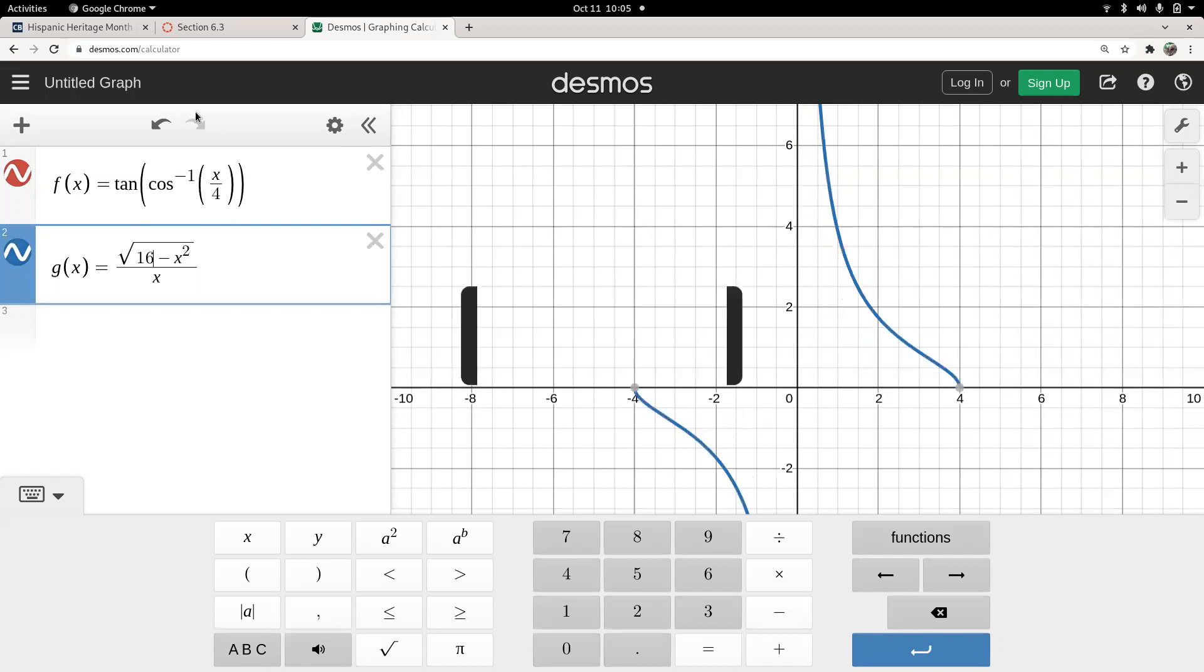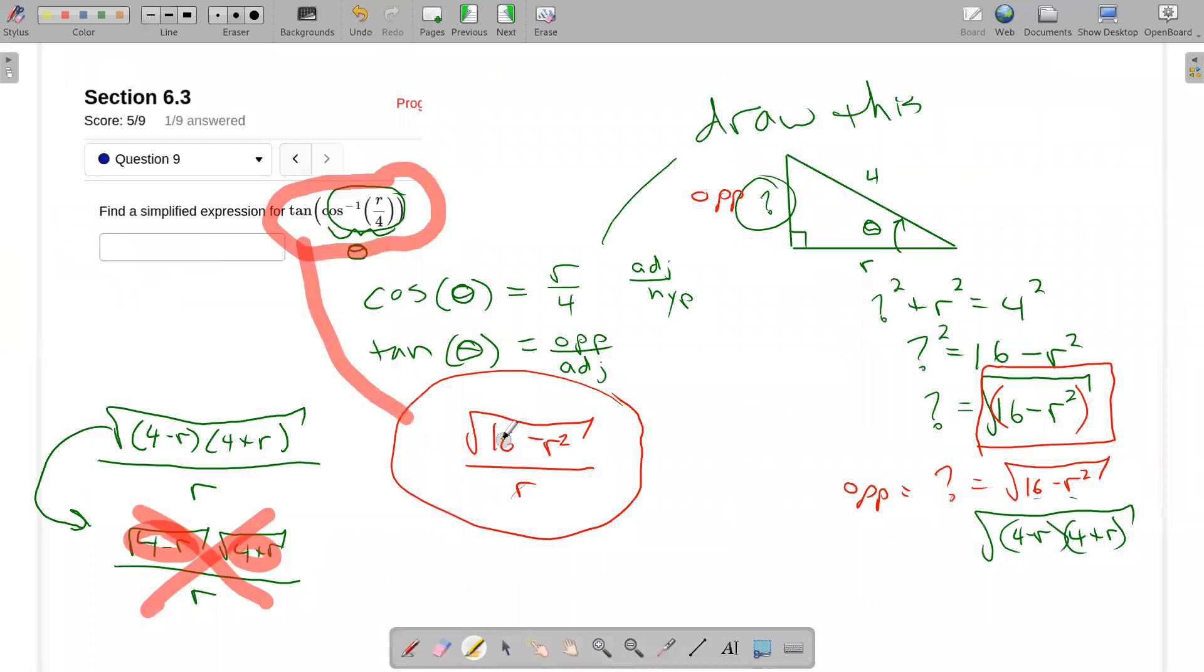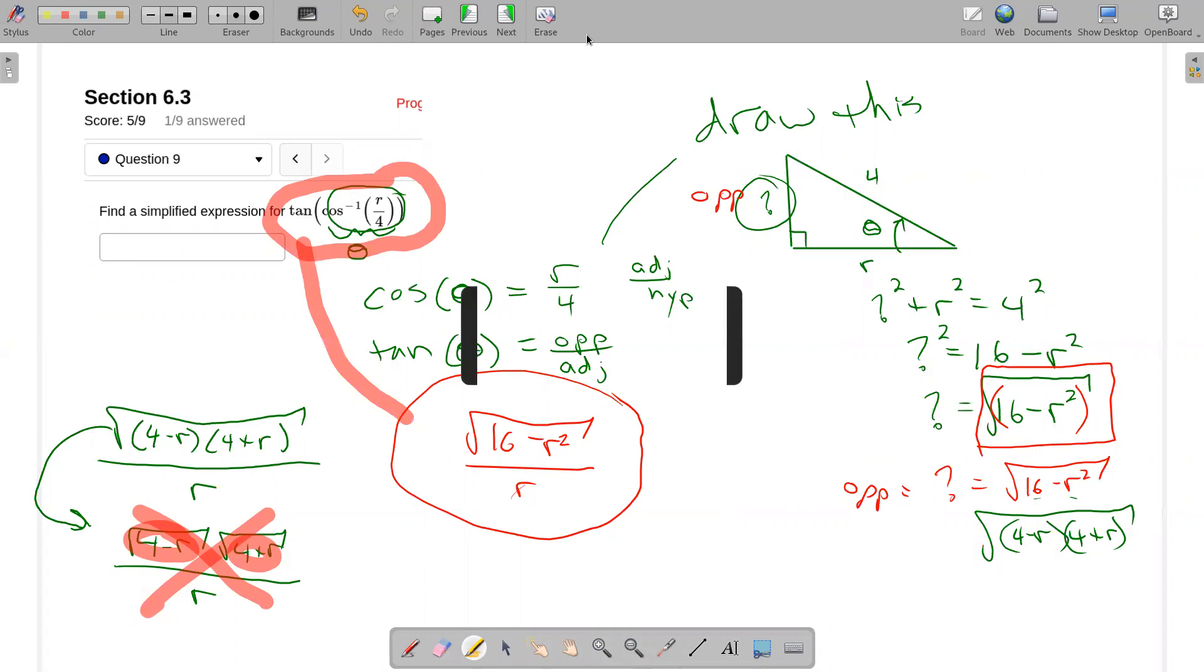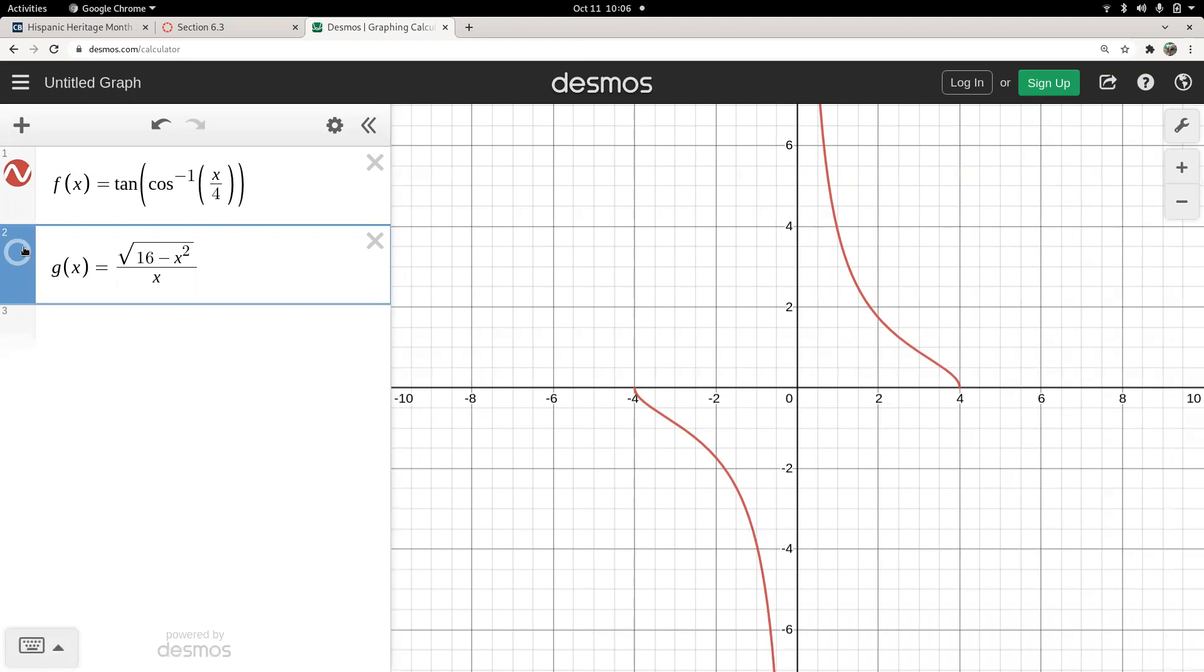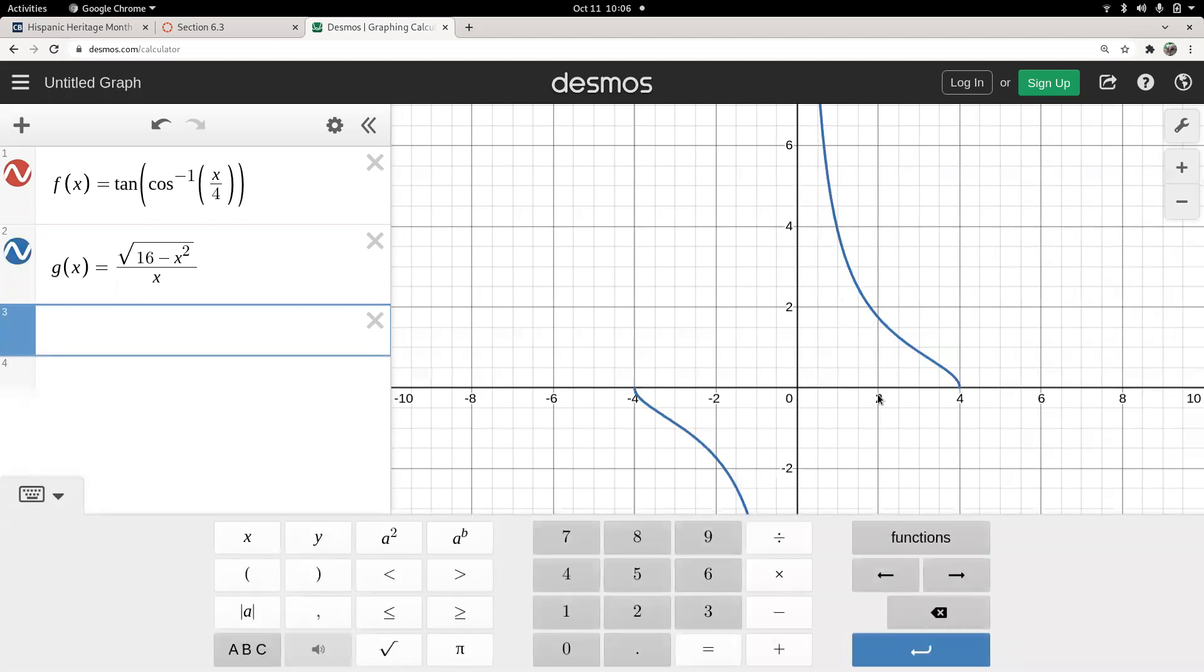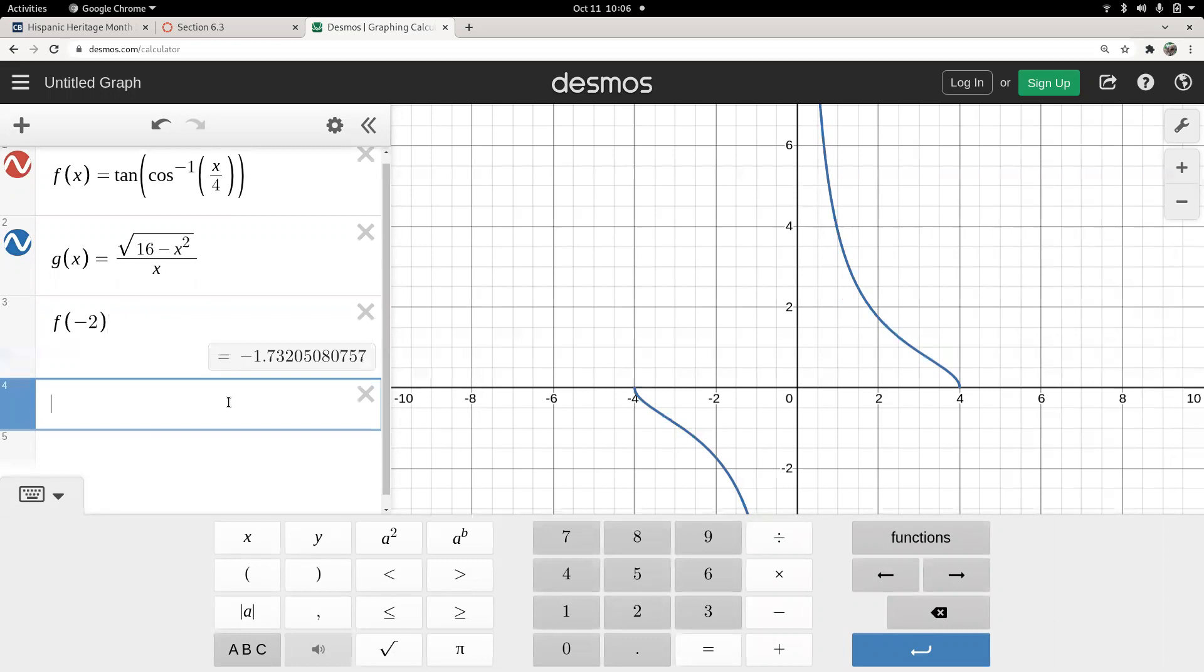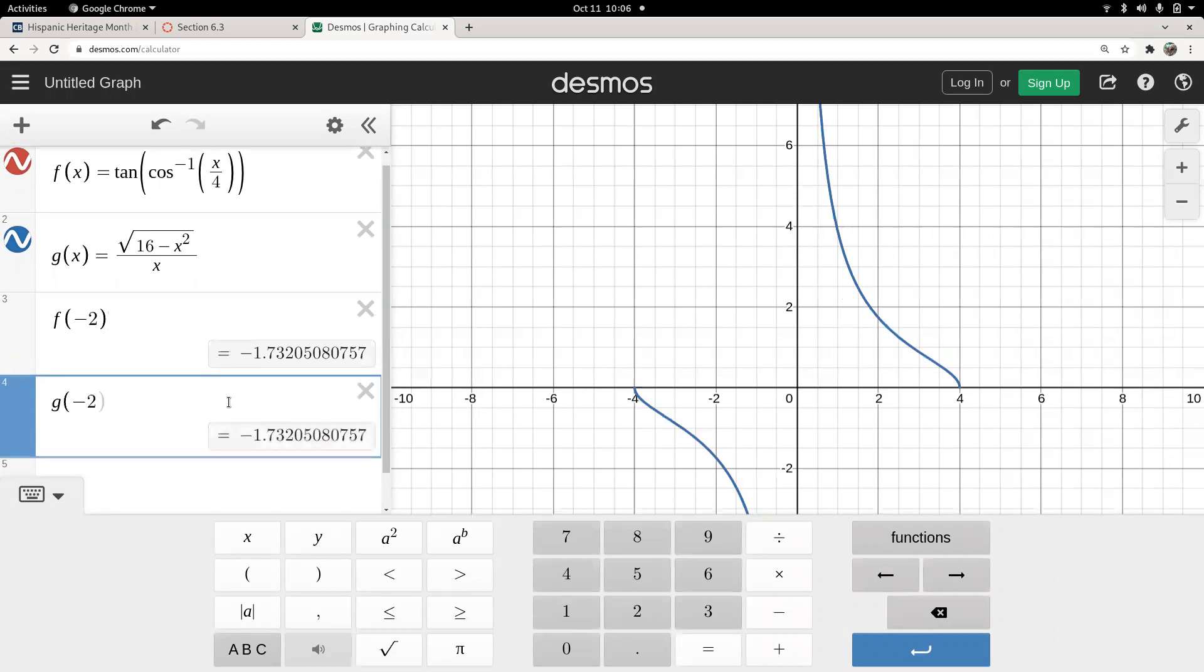16 minus x squared over x. 16 minus x squared in the root over x. And then this is blue. If I click over here and turn off the blue, I see the red. If I click on the blue again, it turns it back on, and it looks like they sit right on top of each other. If there's any doubt, then just pick a number, like x equals negative 2, and see if they both give the same y value. So what is f of negative 2? What is g of negative 2?